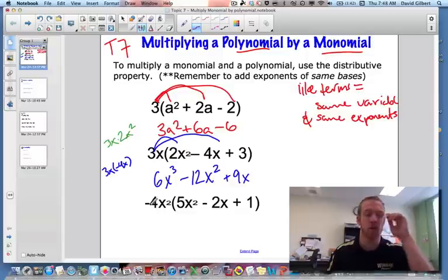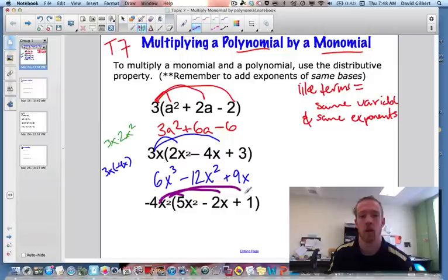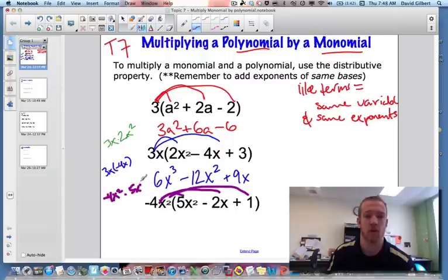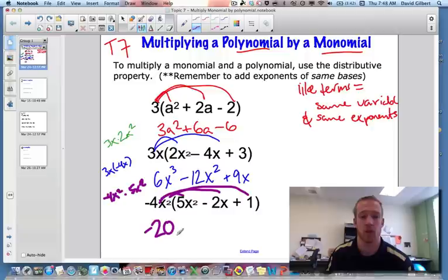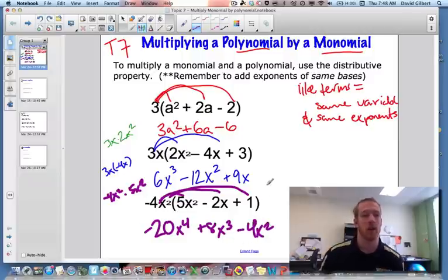Alright, last one here. We're going to be multiplying negative 4x squared by everything in the parentheses. So negative 4x squared times 5x squared, negative 4 times 5 is negative 20, x squared times x squared is x to the 4th. Negative times a negative is a positive 8x cubed. Negative 4x squared times 1 is negative 4x squared. Done.